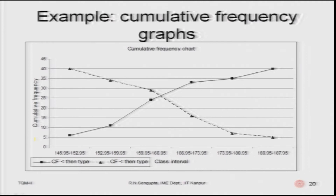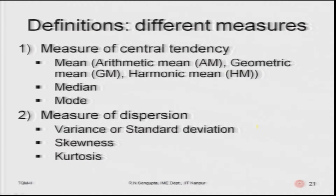The black curve and the yellow highlighted curve — one gives the less-than type and the other the greater-than type. This is the problem which has been solved, and the hashed marked region corresponds to the less-than type.